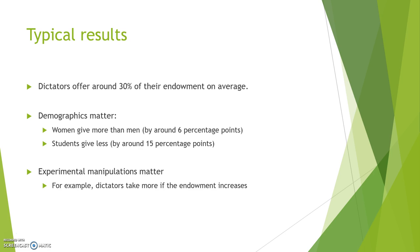We know that demographics matter. For example, women give more than men by around 6 percentage points, and a typical college student gives less than a non-student by around 15 percentage points.